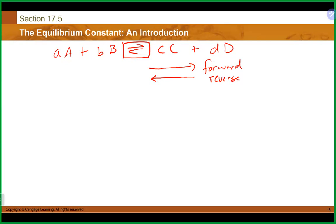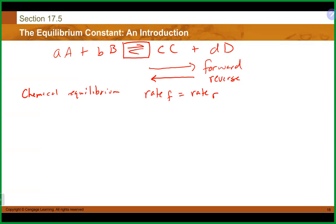Eventually the system will reach chemical equilibrium. When it reaches chemical equilibrium, it does not mean you have the same amount on both sides of the arrow. What we're really talking about is the rate of the forward reaction equals the rate of the reverse reaction. Our reactants are making products at the same rate as products are recombining and going backwards, which locks concentrations in place at that particular point.